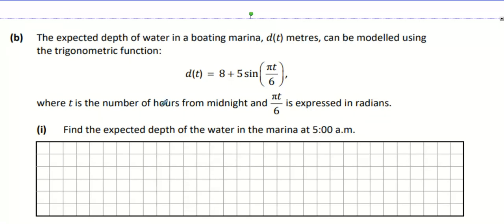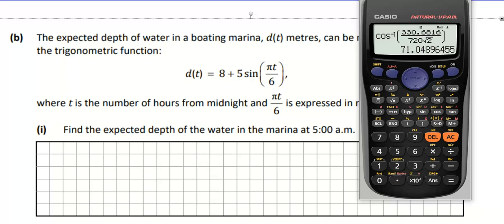All right, guys. Now, put your calculator into radians. Shift, set up, radians. Enter in 8 plus 5 sine pi t, so it's going to be pi x over 6. Close bracket. I actually didn't do a table function. That was really smart of me. Start at 0. 0 is midnight. I'll do 24 hours if my calculator allows it. It does.